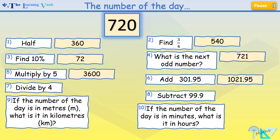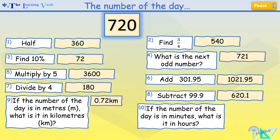For 6 is 1021.95. For 7 is 180. For 8 is 620.1. For 9 is 0.72 kilometers. And finally, for 10 is 12 hours.